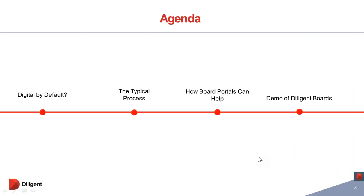On the agenda today I will go through the following from left to right: digital by default and what it means; a typical process from the administrator's view in creating and delivering board materials and how directors are receiving, reviewing and annotating the information; how board portals can help; and finally I am pleased to show how it all works on the Diligent Boards system.